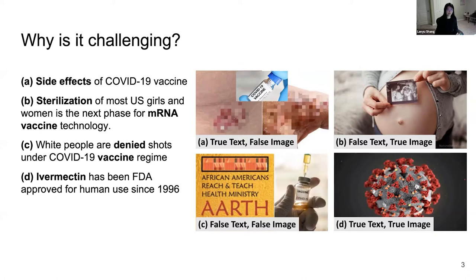Similarly, Figure 1b utilizes a true image to support a false claim that the mRNA vaccine is designed for sterilization. And Figure 1c contains both a false text and a false image, together making up the misleading message that white people are denied the COVID vaccine by the health ministry.